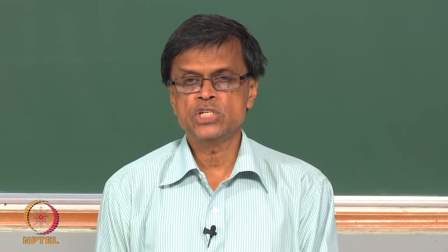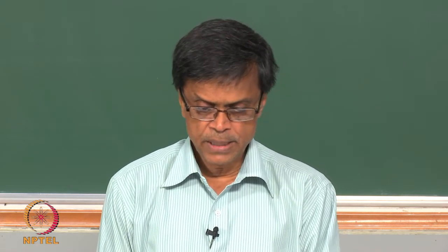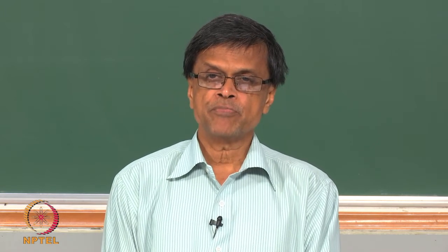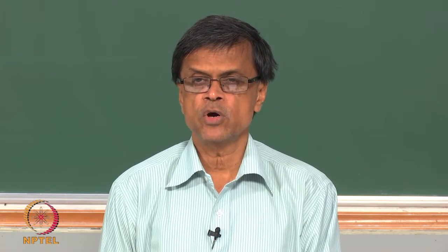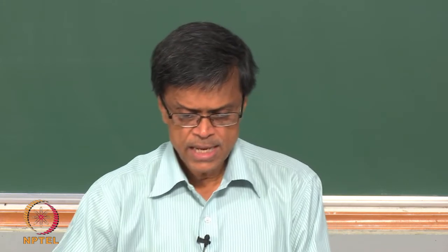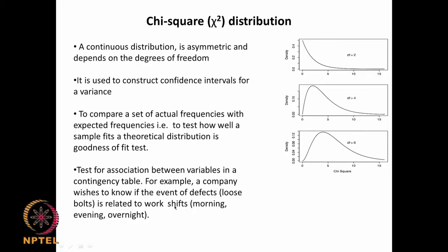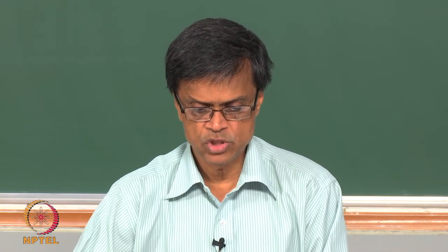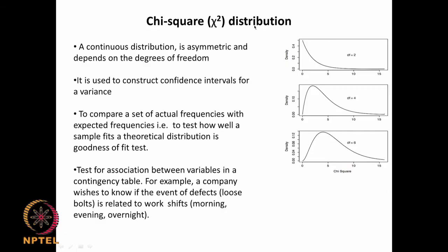Each of the workers in each of these shifts are manufacturing a particular part like bolts. You find some failures in some shifts and some successes in others — morning shift, evening shift, and night shift. Is there an association? It is generally considered that people working night shifts may make more mistakes and produce more defects. So we use chi-square distribution and chi-square test for this type of situation.